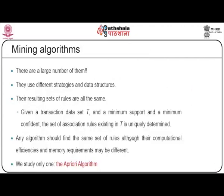The A Priori algorithm is designed to study all possible combinations. It has two definitive stages: join and prune. By joining, all possible combinations are studied. There are many mining algorithms using different strategies and data structures, but the resulting sets of rules are all the same. Given a transaction dataset T with a minimum support and minimum confidence, any algorithm should find the same set of rules, though computational efficiency and memory requirements may differ.